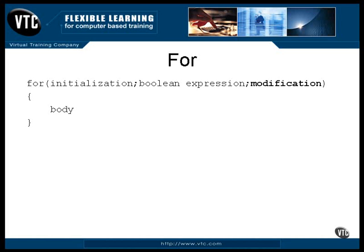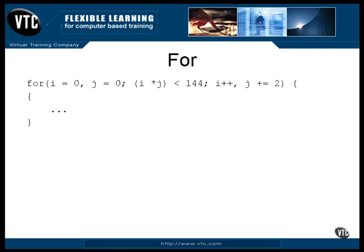Just like the initialization code, you can include several statements here with all of them separated by commas. This is at the very bottom of the loop, and as soon as it finishes execution, there is a jump back to the Boolean expression at the top of the loop. This is an example of a for loop with two counters, both being initialized to zero. The value of i is increased by one each time through the loop, and the value of j is increased by two. As long as the product of the two counters is less than 144, the loop will continue to execute.